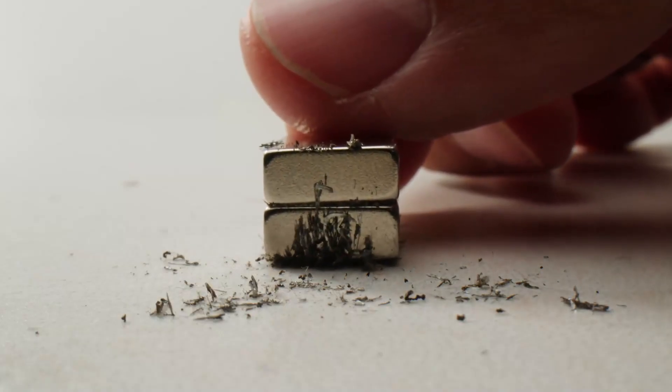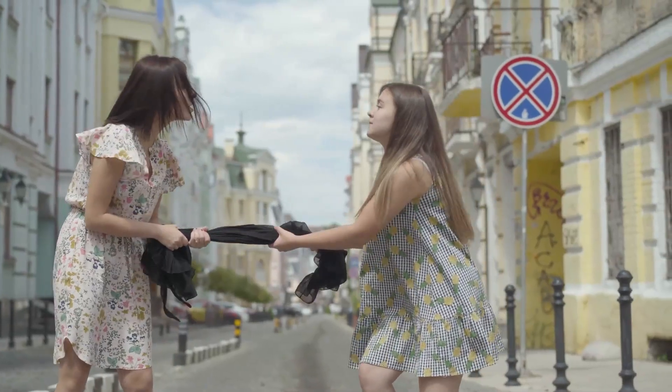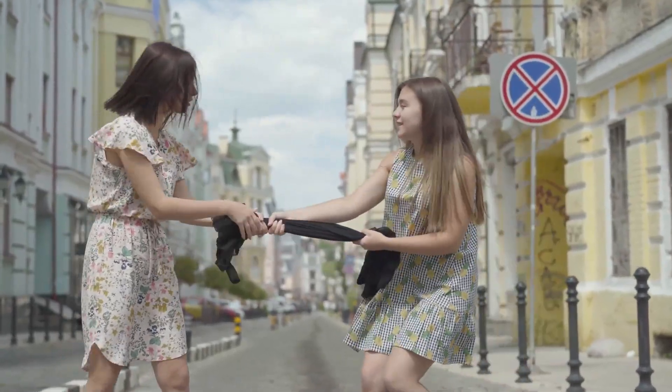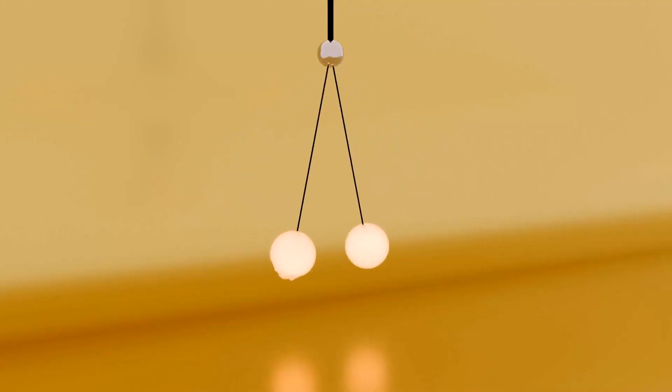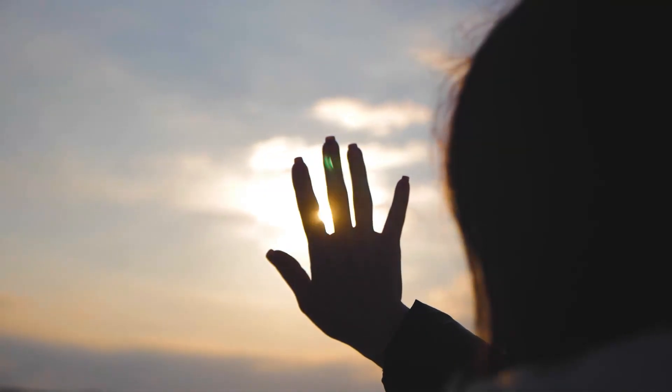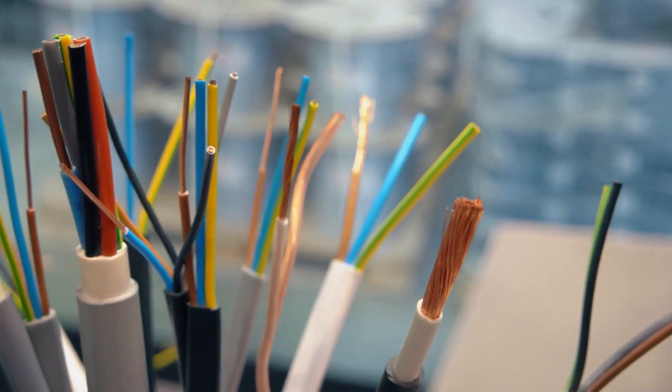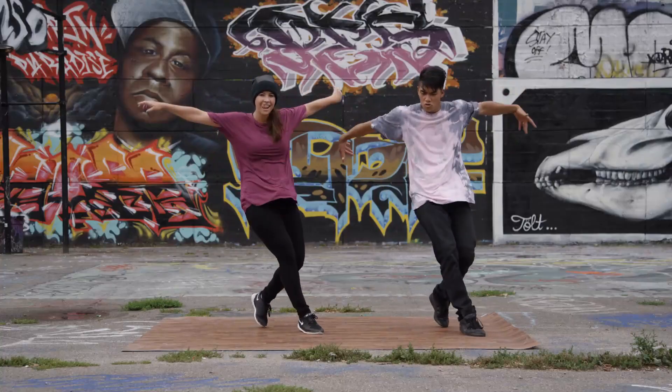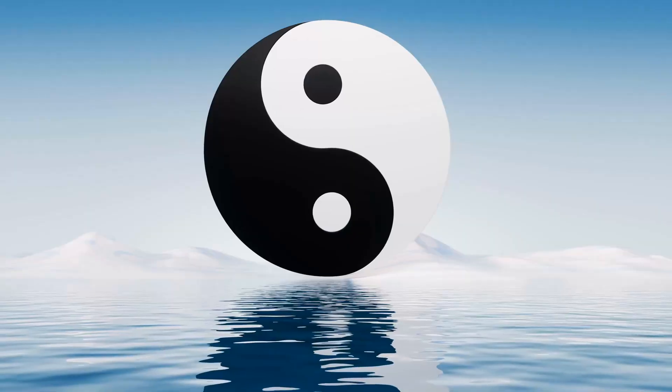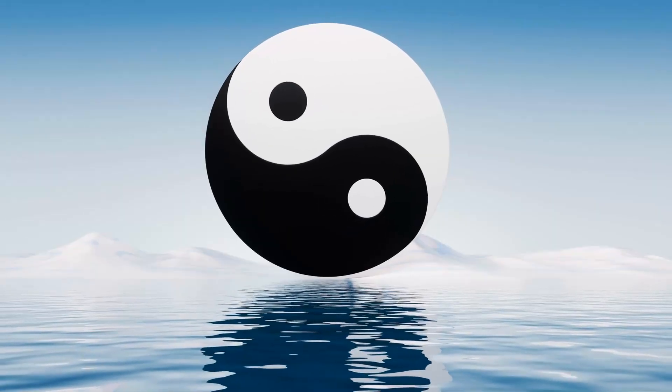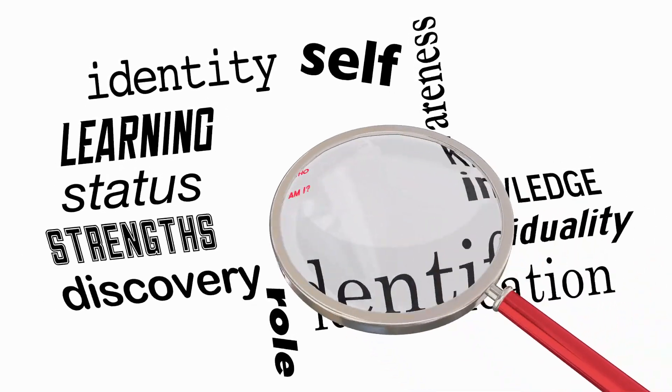Let's start our lesson with a riddle. What am I? I stick to metal with might. I have two sides, one pulls, one fights. I can attract or I can repel. A force you can't always see or tell. I don't need wires, but I still work strong. I can flip and switch, like a dancer's song. Opposites attract, that's how I play. So tell me now, what am I today?